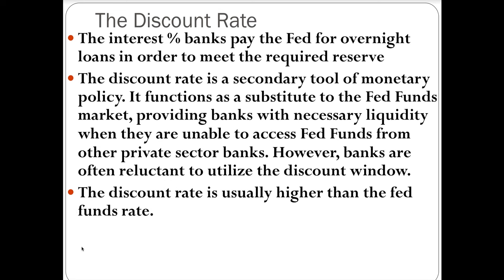The discount rate is usually higher than the Federal funds rate, and this is done so that banks borrow from each other and not the Federal Reserve. Lowering the discount rate is part of an expansionary monetary policy because banks can borrow money from the Federal Reserve cheaper, so they'll lend out more of their excess reserves. If you increase the discount rate, that's contractionary because banks are borrowing at a higher interest rate, making them less likely to lend out their excess reserves, which contracts the economy.